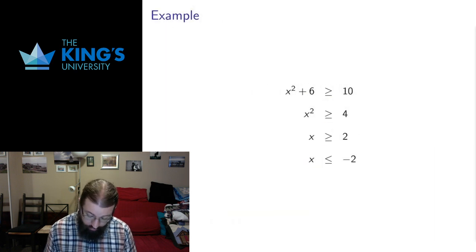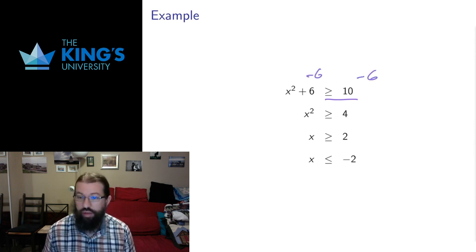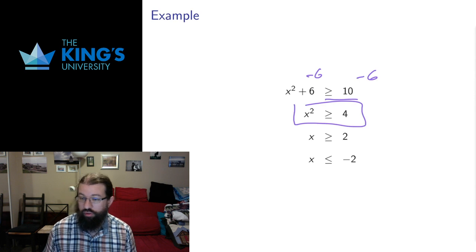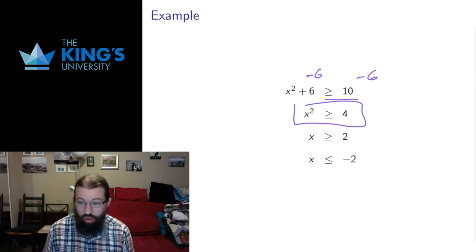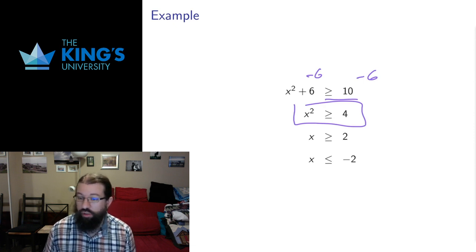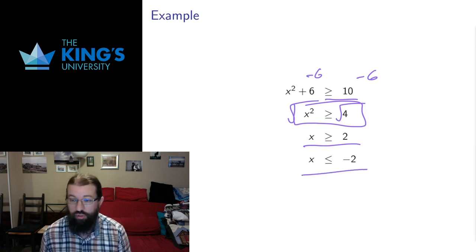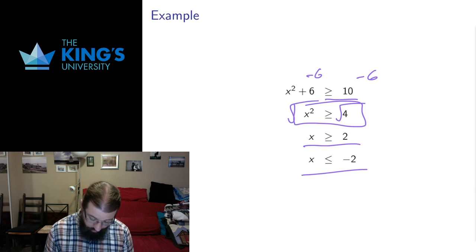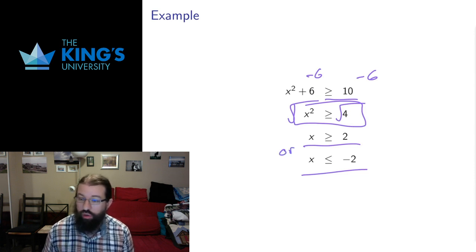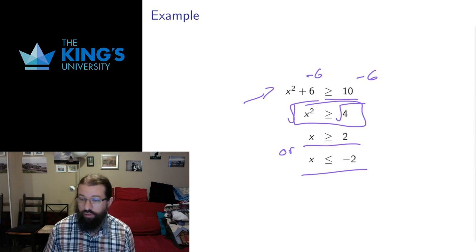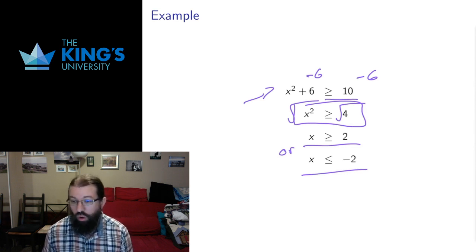What if I had the same thing but x squared plus 6 less than 10? Subtracting 6 from both sides gives x squared greater than 4. This is a real condition — true for some numbers but not others. Taking the square root of both sides, I get x greater than 2, but I also have to consider large negative numbers whose squares become large positive numbers. So I get two cases: x greater than 2 or x less than negative 2. The original inequality is satisfied by all numbers greater than or equal to 2 or less than or equal to negative 2.